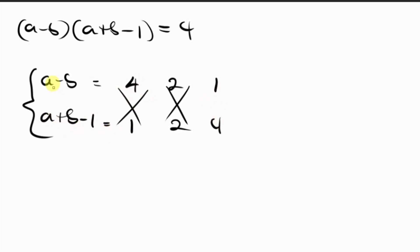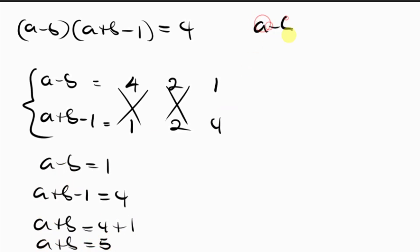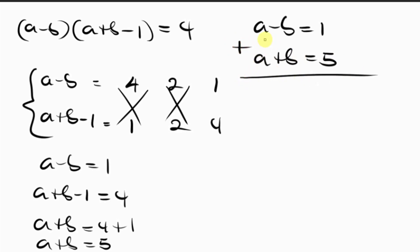So we work with the case: a minus b equals 1 and a plus b minus 1 equals 4. Moving the negative 1 to the right-hand side gives a plus b equals 5. Now we have two equations: a minus b equals 1 and a plus b equals 5. Adding them, 2a equals 6, so a equals 3.